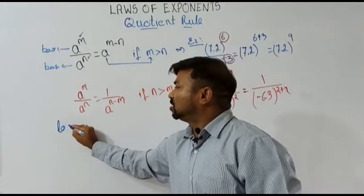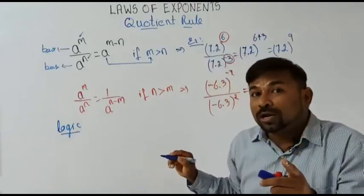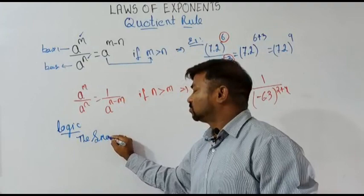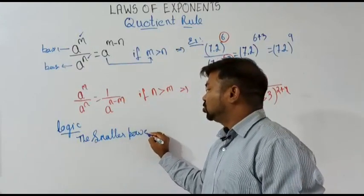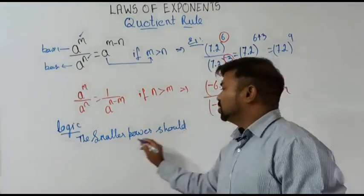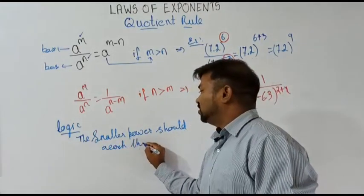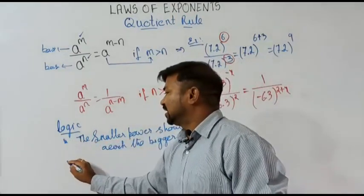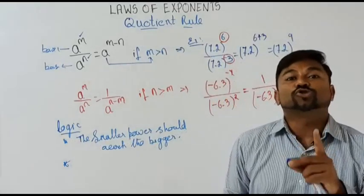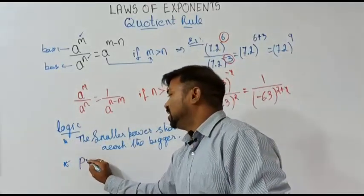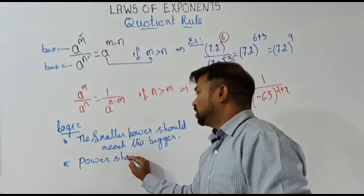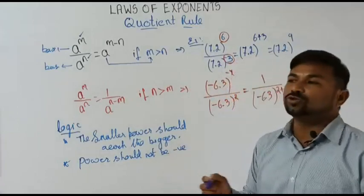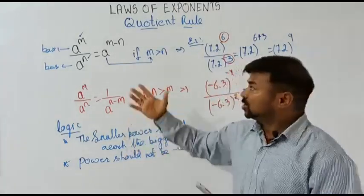So the two important logics to remember: First, the smaller power should reach the bigger power. Second, the power should not be negative — power should always be positive. These are the two very important logics you have to keep in mind.